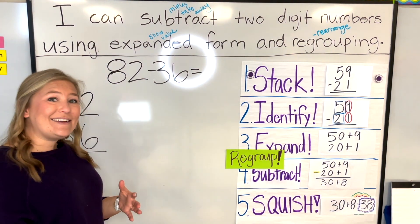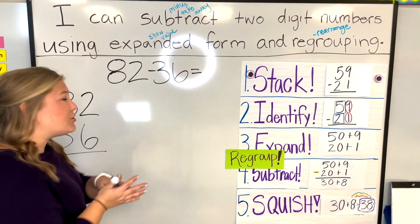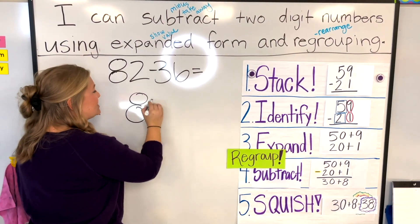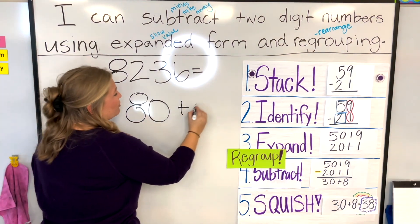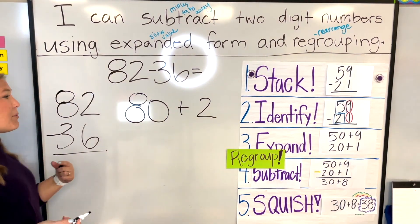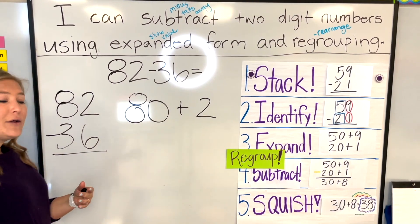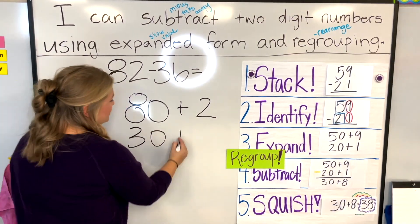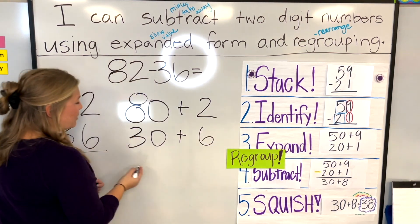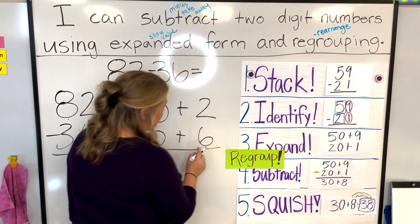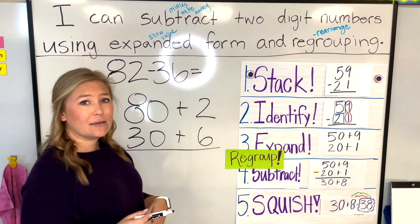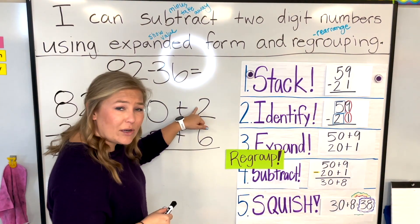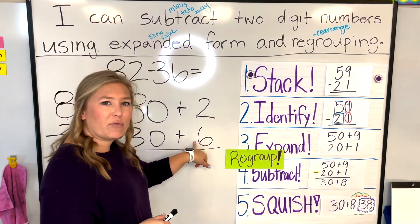Now step three: expand our numbers. The number 82 — I hear it: 80 is the value in the tens place, and two is the value in the ones place. I do the same with 36: three tens is 30, plus six in the ones place. I've expanded them out. I'm not ready to subtract yet, because I see the two in my ones place is smaller than the six in my ones place.